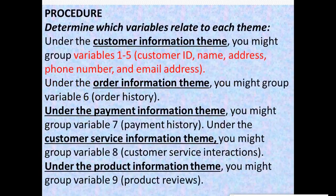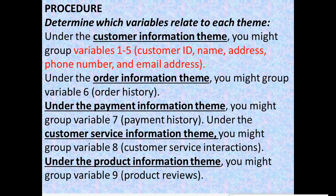So what is the procedure for grouping variables according to their respective entities? The first step is to determine which variables relate to each theme. For example, under the customer information theme, you might group variables 1 to 5: customer ID, name, address, phone numbers, and email address. Here we have grouped our variables into their respective entity — the customer information theme.